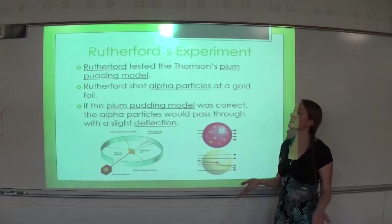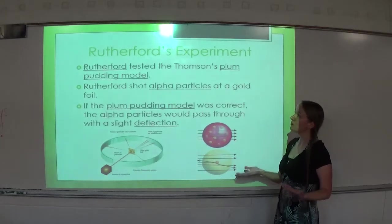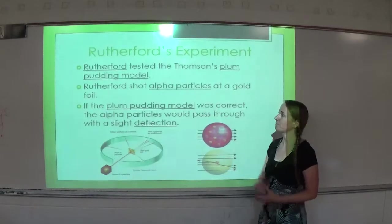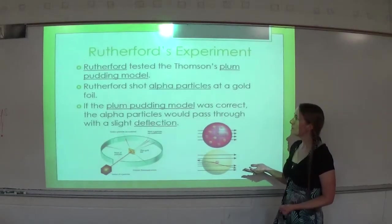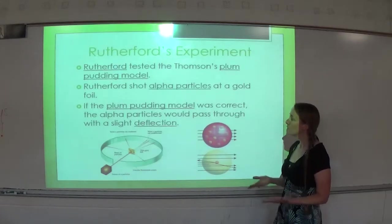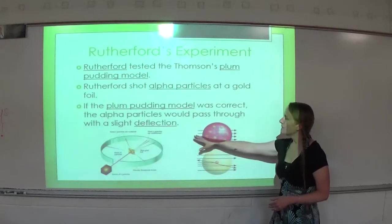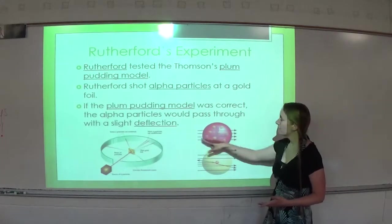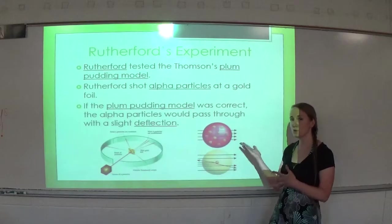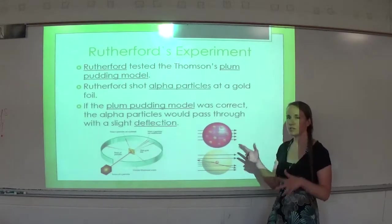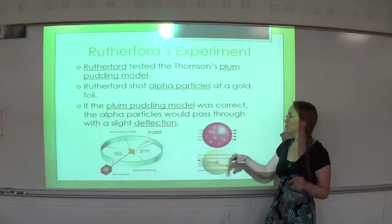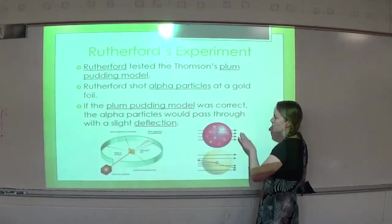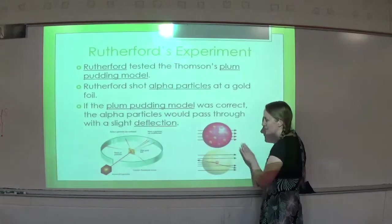Rutherford decided to test Thomson's plum pudding model. He shot alpha particles at gold foil. Alpha particles are just a double positive helium atom. If the plum pudding model was correct, the alpha particles would pass through with slight deflection — those double positive particles encountering the positive force field should be able to make it through but would kind of bend, or deflect, on their way through.